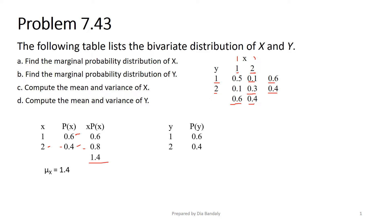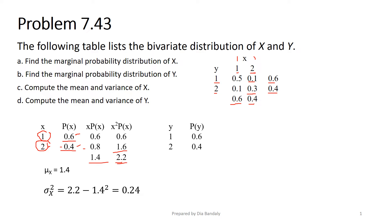For the variance, remember it's the sum of x-squared times P of x, minus the mean squared. So we add a column x-squared times P of x: 1-squared times 0.6 gives 0.6, and 2-squared — that's 4 — times 0.4 gives 1.6. Summing to get 2.2, then subtracting the mean squared: 1.4 squared is 1.96. So the variance is 2.2 minus 1.96, which gives 0.24.